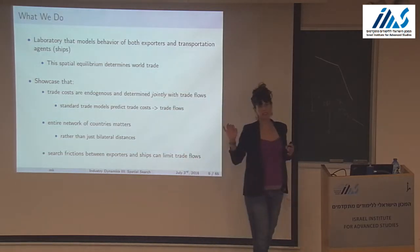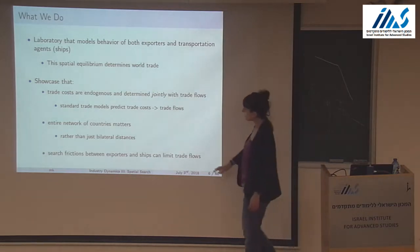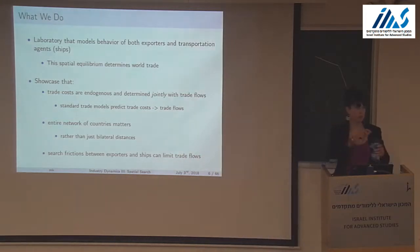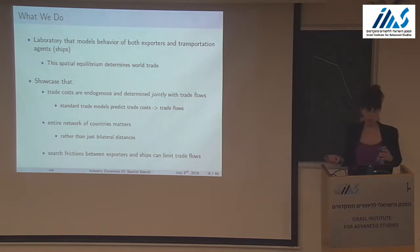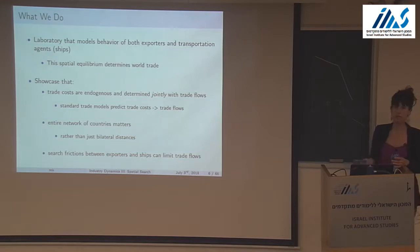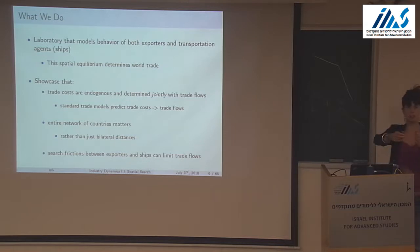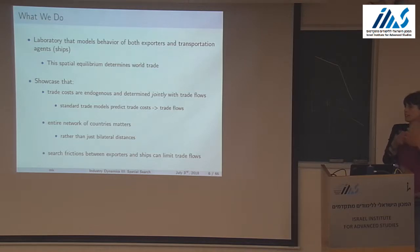The most important consequence is that there are network effects — the whole network of countries matters rather than just bilateral distances between trading partners. The second main point is that search frictions between exporters and ships can actually limit trade flows. In the taxi papers, people argue there are search frictions, but remember that demand is unobserved — we don't know if a taxi was in a neighborhood and didn't find anybody, or if nobody was there.